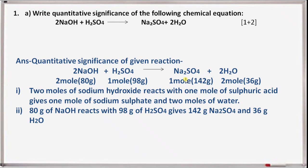2 moles of sodium hydroxide react with 1 mole of sulfuric acid to give 1 mole of sodium sulfate and 2 moles of water. Second, 80 grams of sodium hydroxide reacts with 98 grams of sulfuric acid to give 142 grams of sodium sulfate and 36 grams of water.